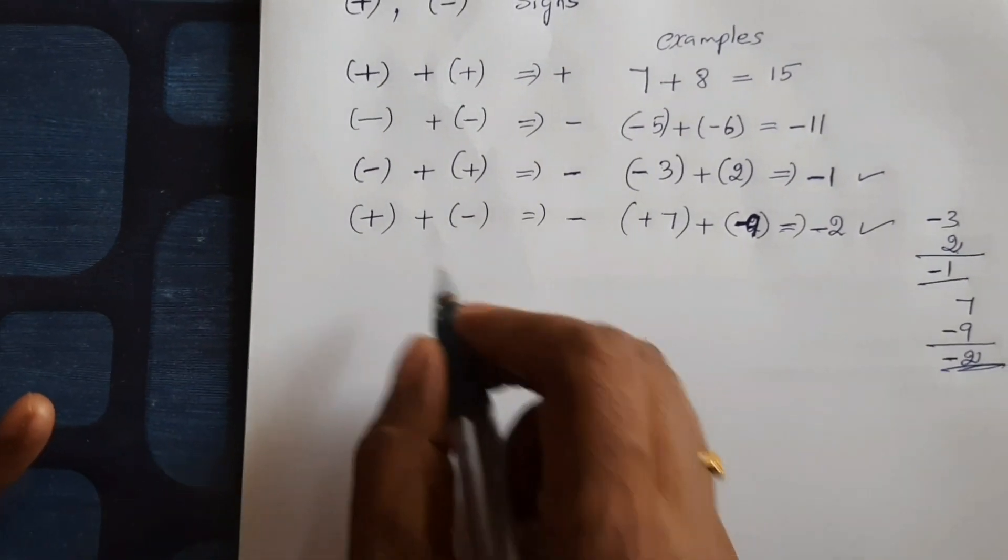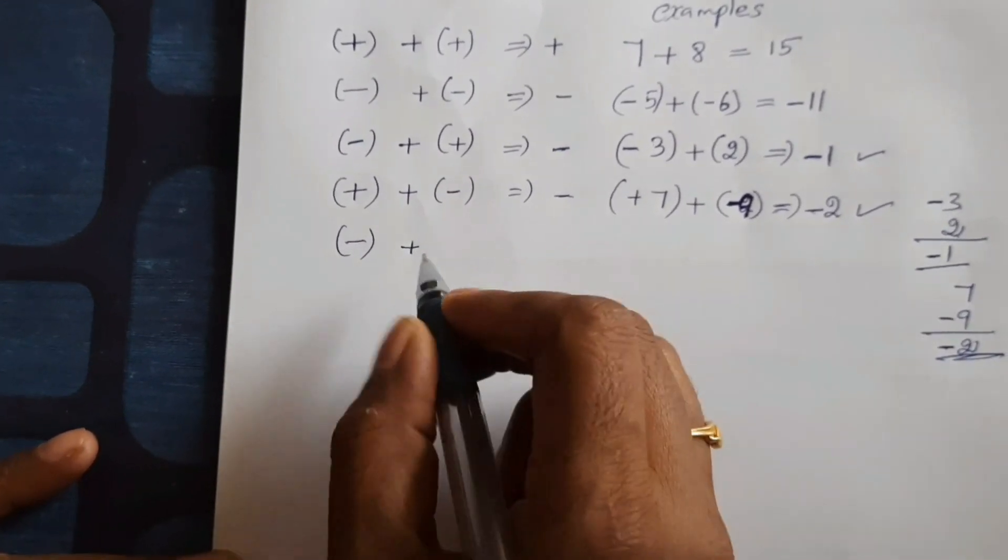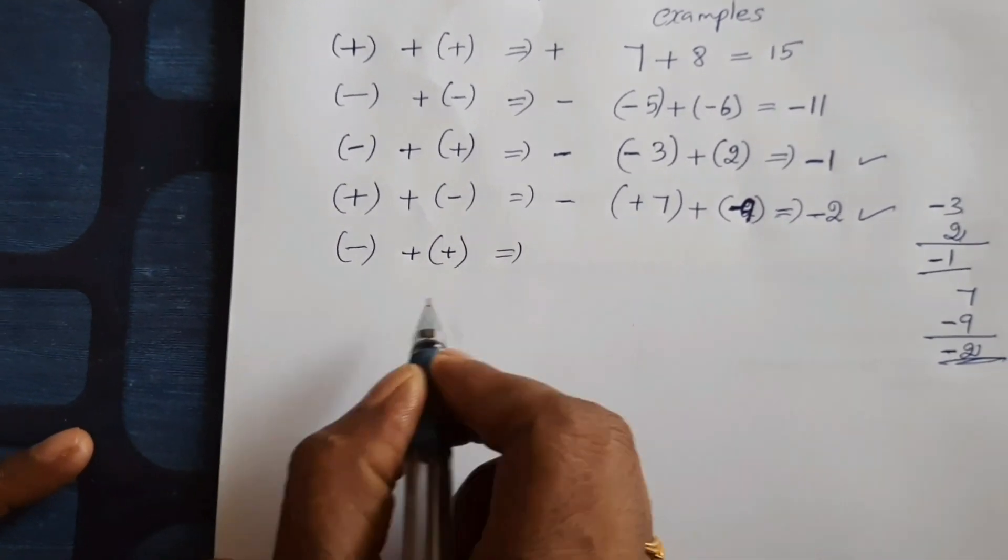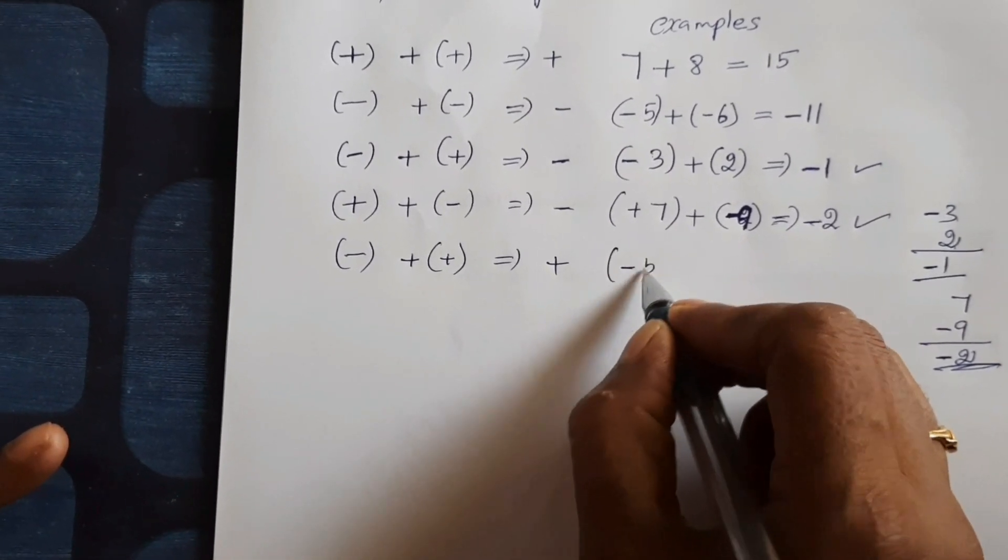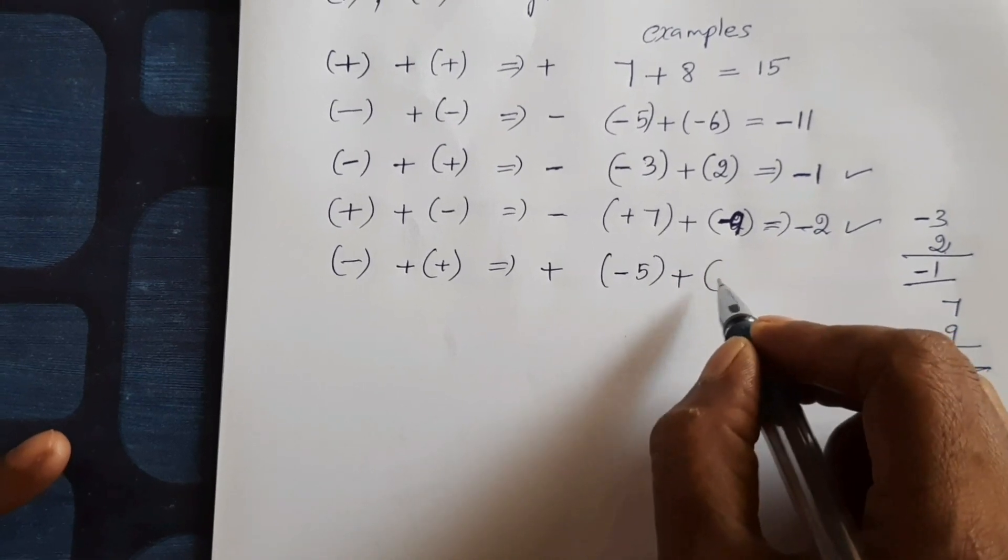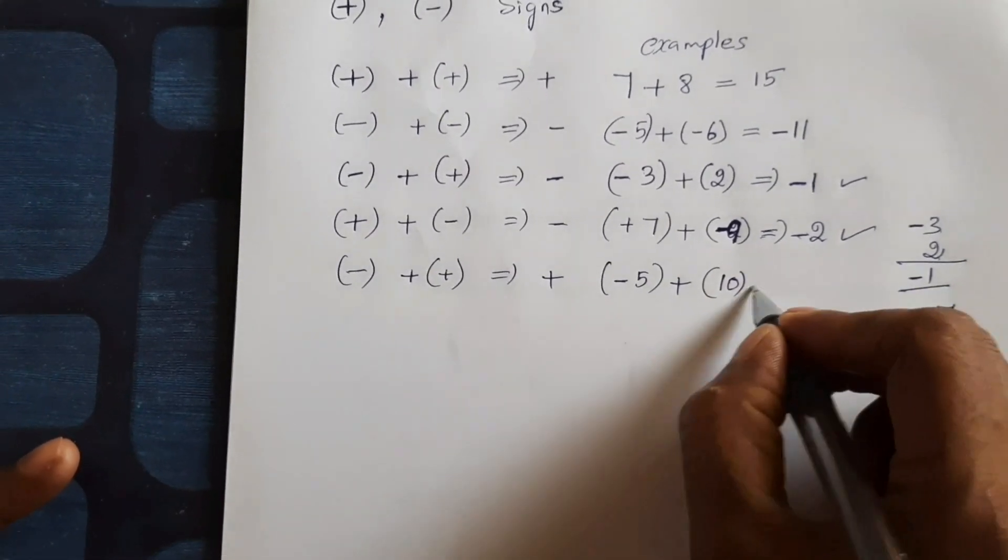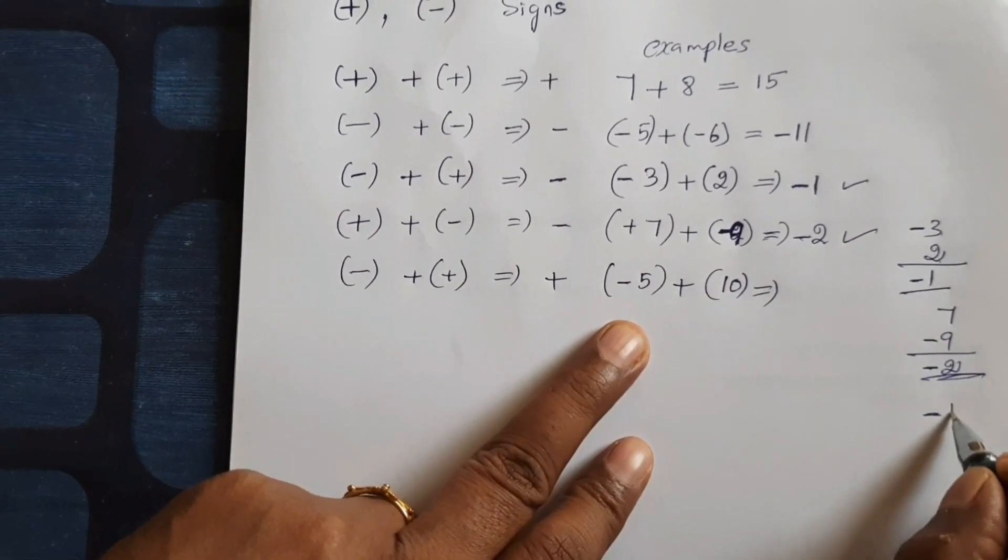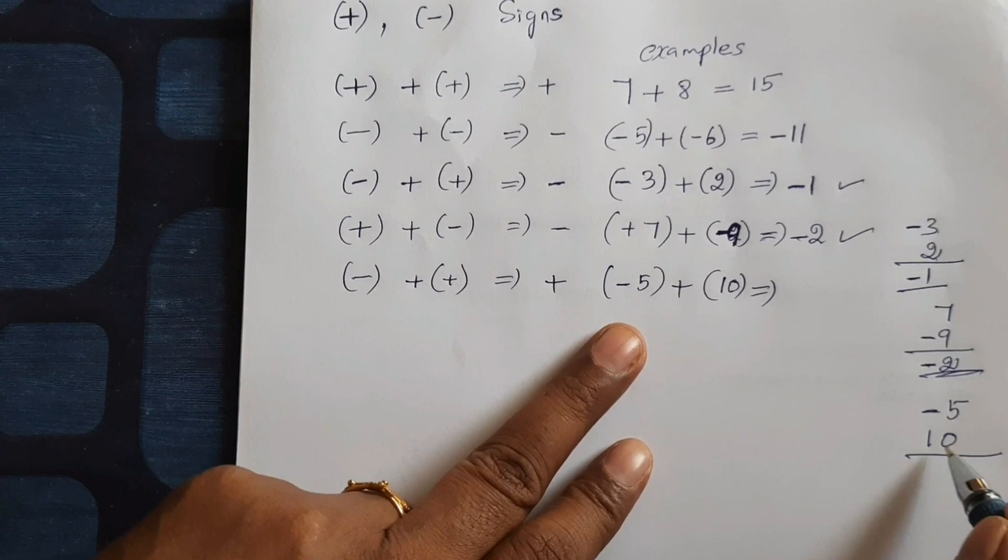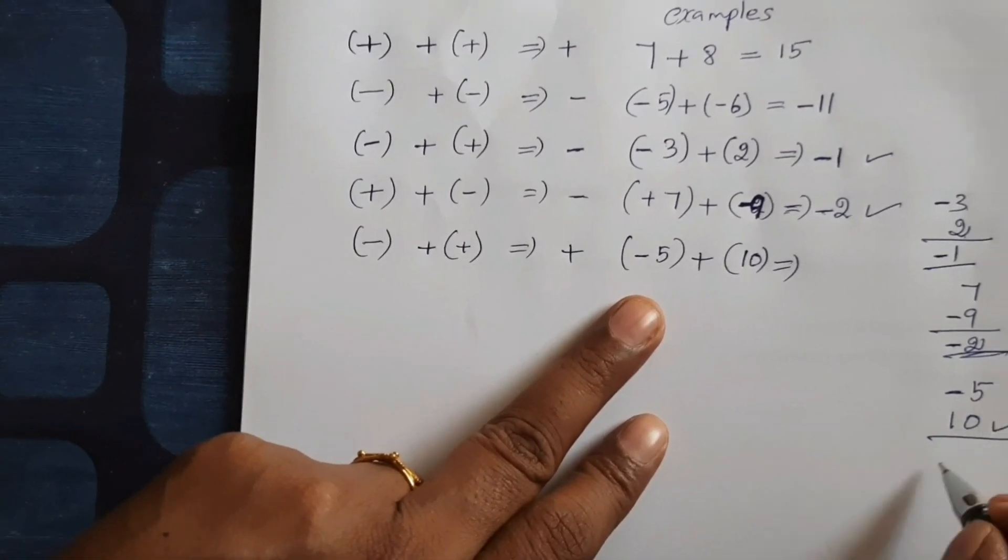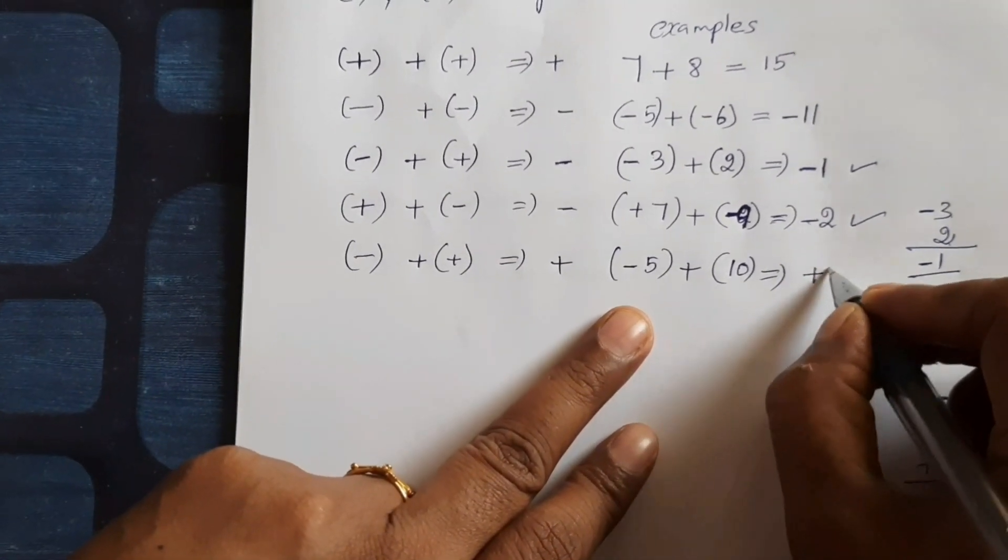Same thing next. Minus plus plus. It gives plus. Because here suppose minus 5, plus, this plus value is more than 5. So 10. You take 10. So minus 5 positive 10. Now which sign is highest? Positive sign is the highest. So plus sign. So 10 minus 5 is positive 5, plus 5.